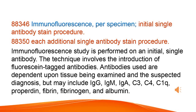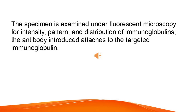Immunofluorescence, per specimen, initial single antibody stain procedure; each additional single antibody stain procedure. The immunofluorescence study involves the introduction of fluorescent tagged antibodies. Antibodies used are dependent upon the tissue being examined and the suspected diagnosis, but may include IgG, IgM, IgA, C3, C4, C1Q, properdin, fibrin, fibrinogen, and albumin. The specimen is examined under fluorescent microscopy for intensity, pattern, and distribution of immunoglobulins. The antibody introduced attaches to the targeted immunoglobulin.